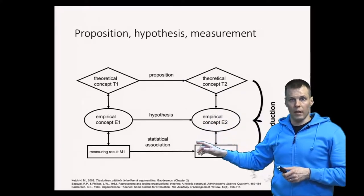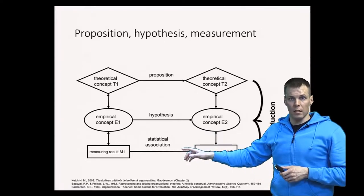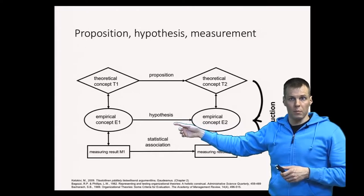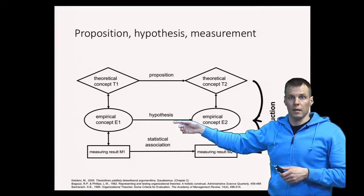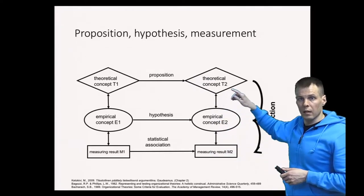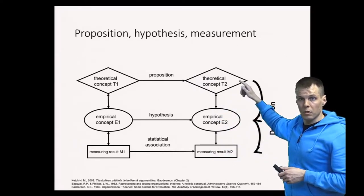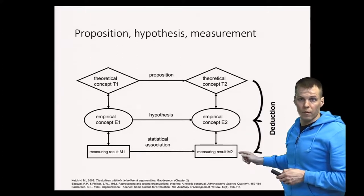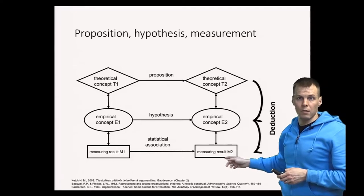Then we collect some data and we test for statistical association, which allows us to make claims about the correctness of the hypothesis. The idea was that we apply deductive logic so that if the proposition is correct, then the hypothesis should be observed, and then we check if we actually do observe it by calculating something based on our measurement results.